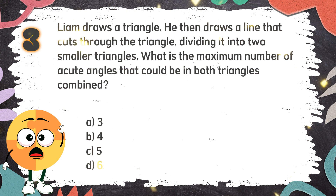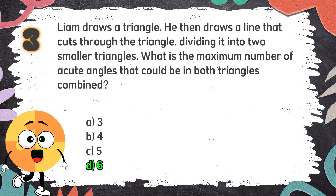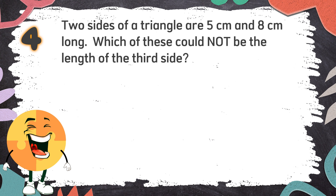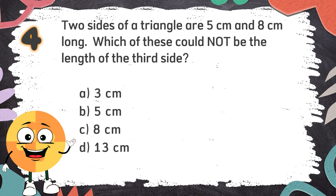The correct answer is D. Six — each of the smaller triangles could have three acute angles. Number 4: Two sides of a triangle are 5 cm and 8 cm long. Which of these could not be the length of the third side? The choices are: A. 3 cm, B. 5 cm, C. 8 cm, D. 13 cm.